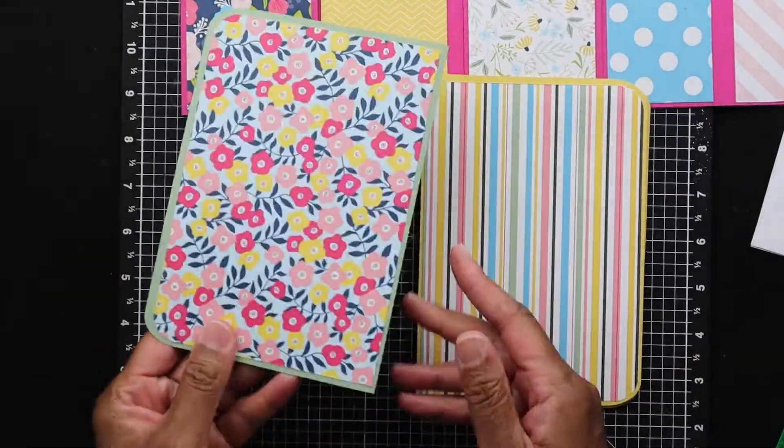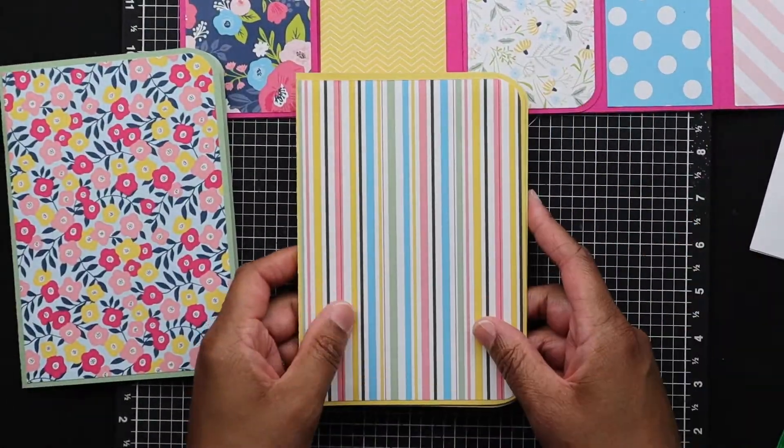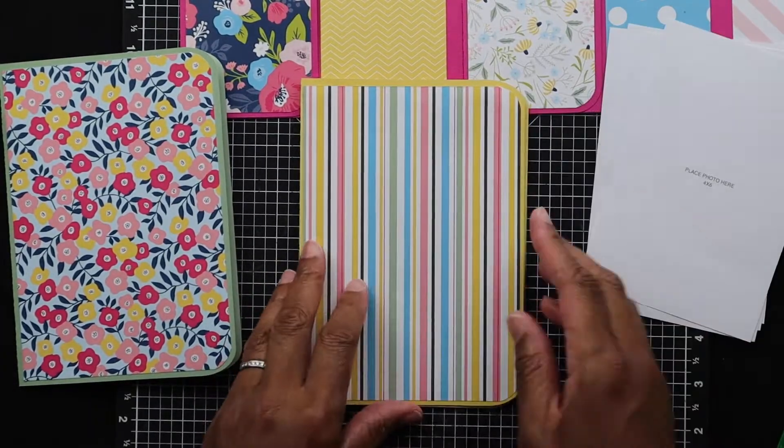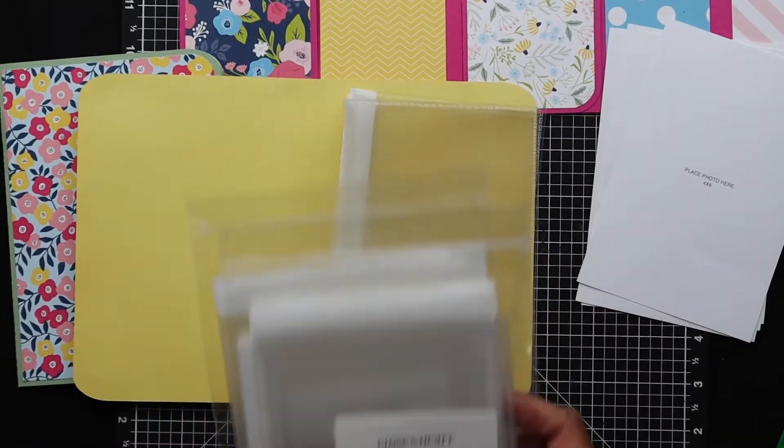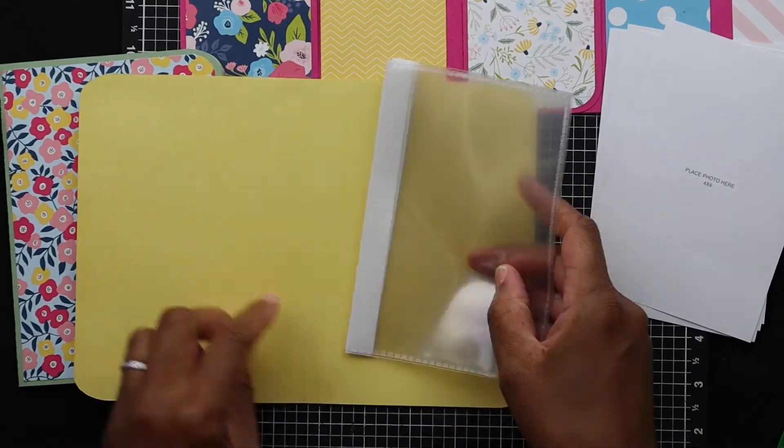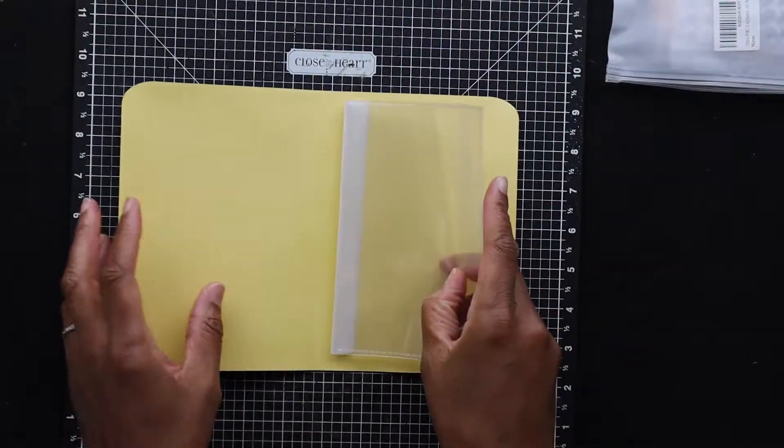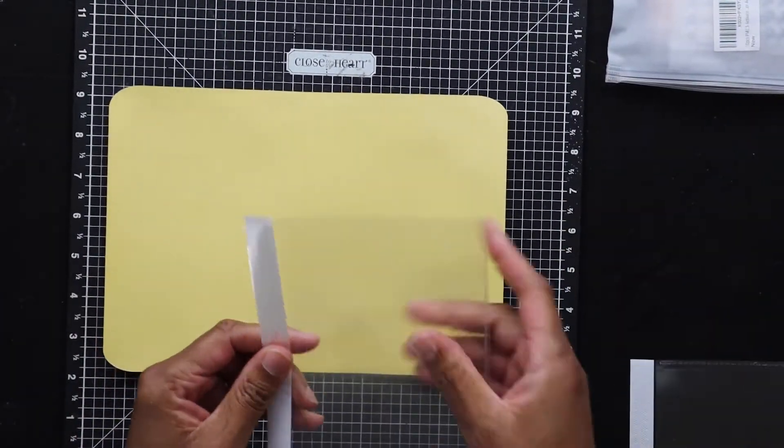I'm going to use flip flaps to make like a booklet for the second one, the yellow one right there, and just peeling off the adhesive and then stacking the flip flaps on top of each other so that they can create that booklet.